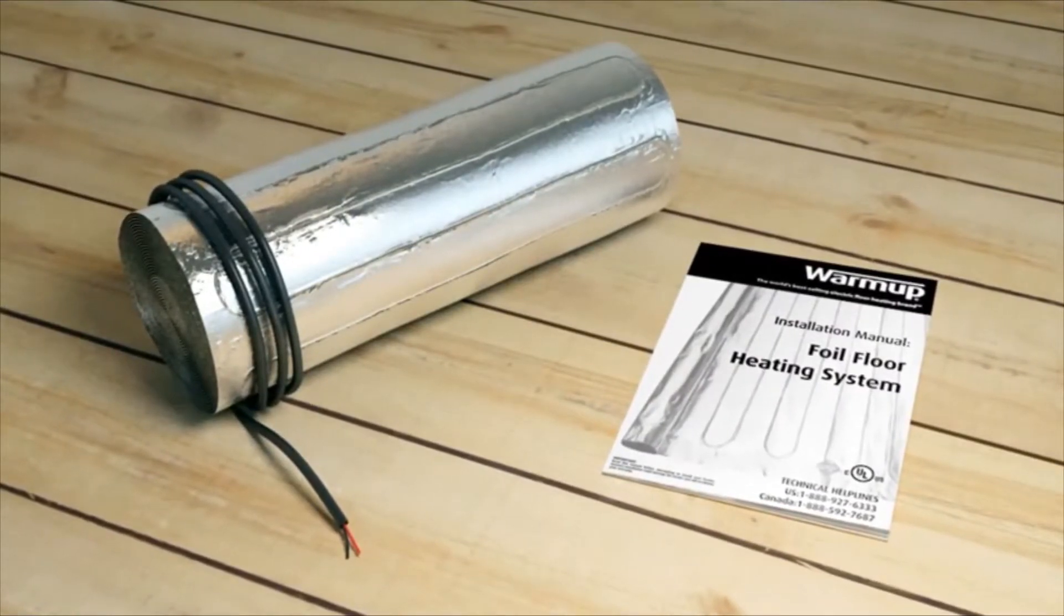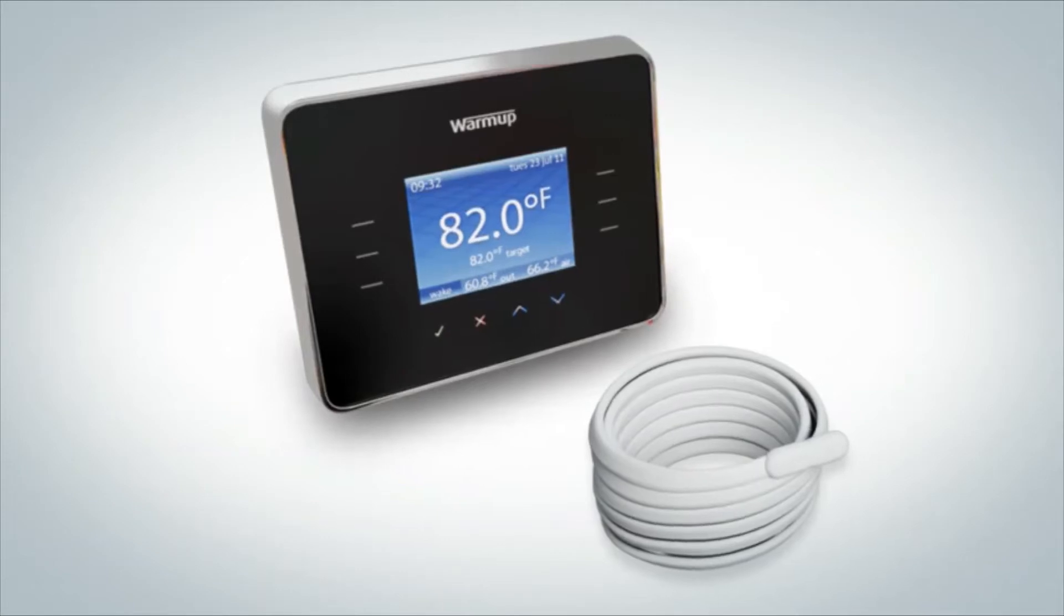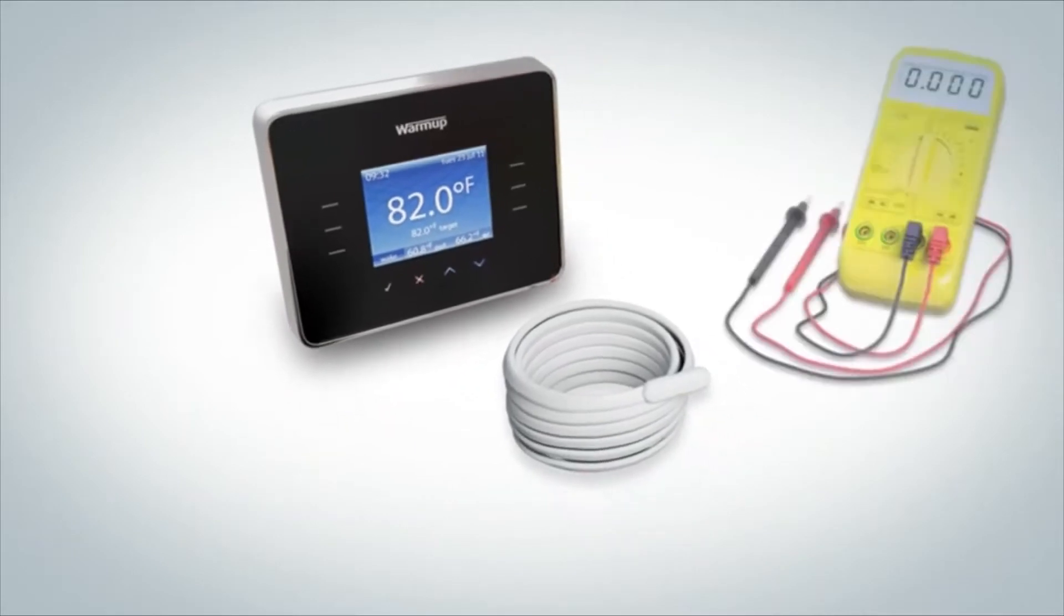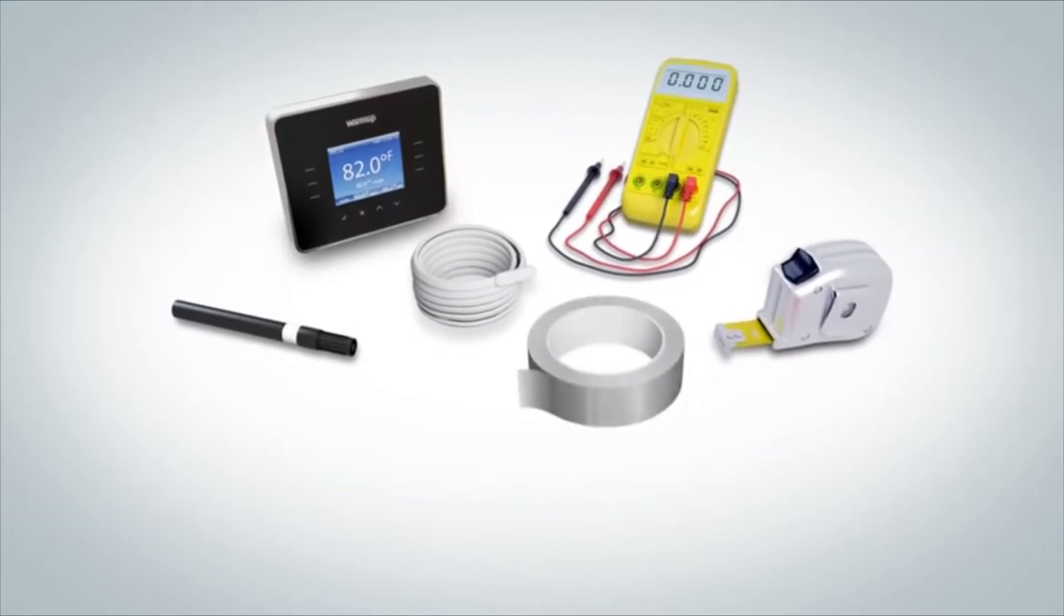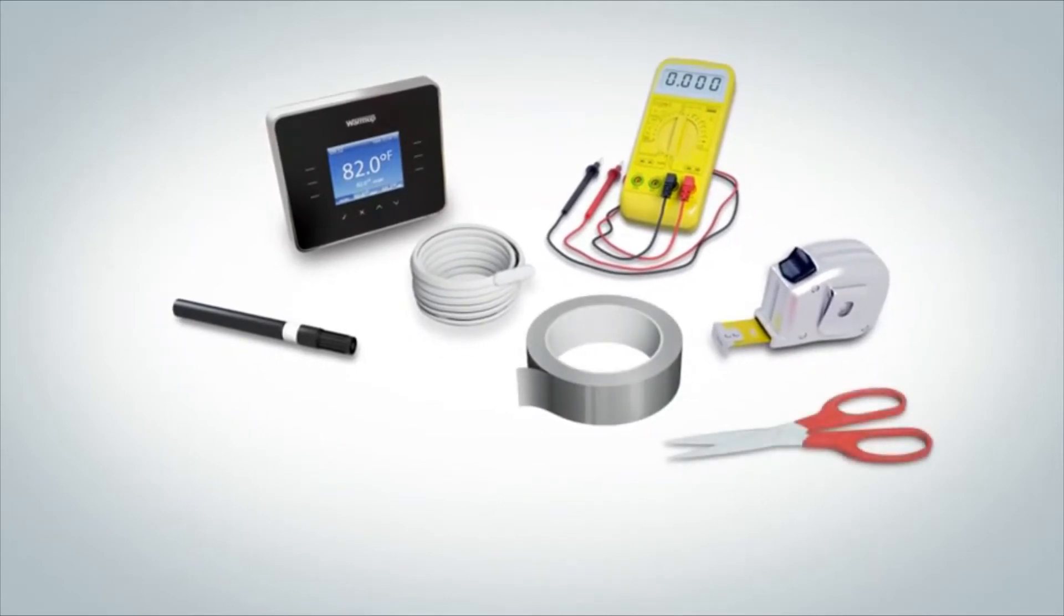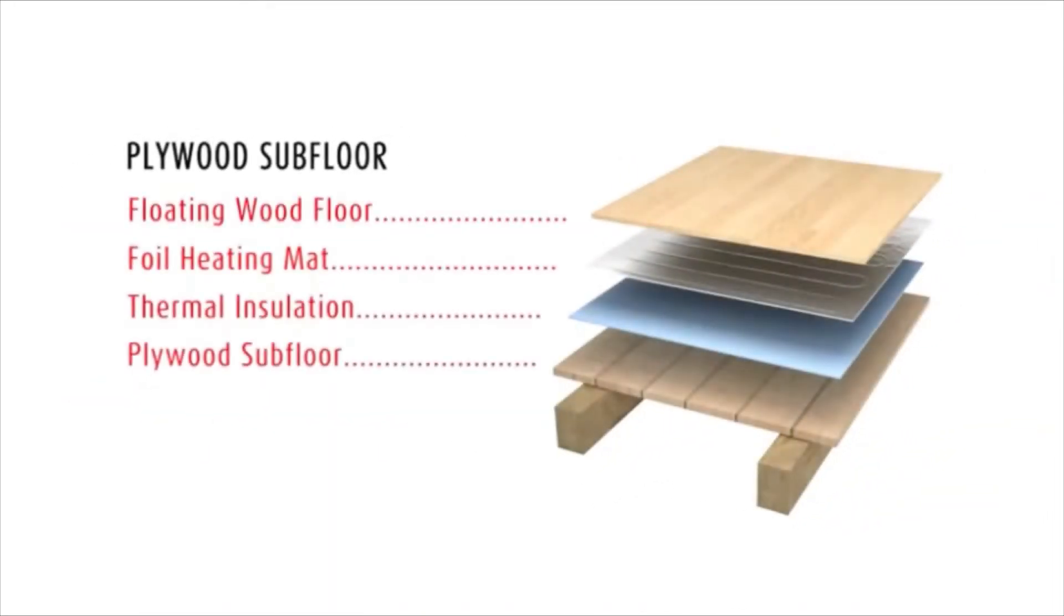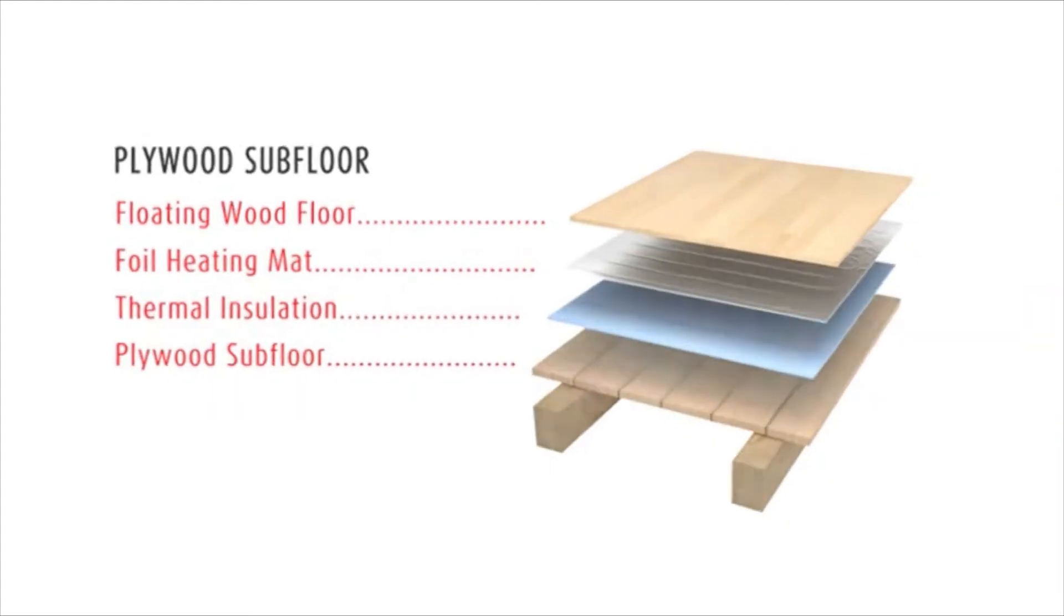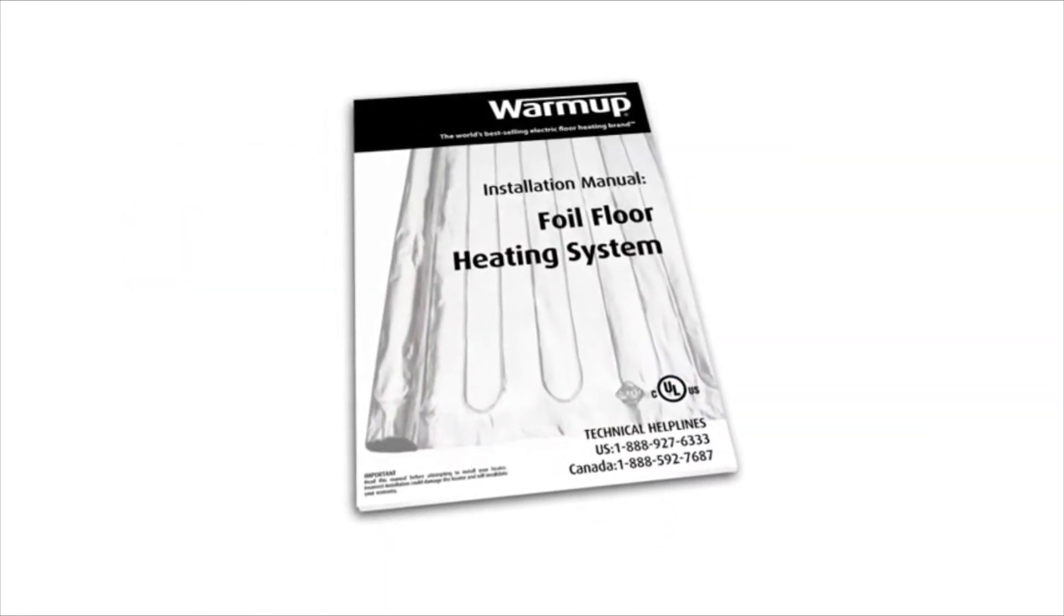You will find the foil heating mat and the installation manual. Before beginning the installation, make sure you have a Warmup thermostat with floor sensor, a digital multimeter, a marker, measuring tape, aluminum foil tape to secure the mats to the floor, scissors for cutting the foil matting where necessary, and a hammer and chisel. Make sure that your underlayment pad is best suited to your application. When installing Warmup foil heating mats on a concrete floor, it is advisable to install a thermal barrier to prevent heat loss to the cold concrete floor. For further information on suitable underlayment products, please contact Warmup or consult the installation manual.